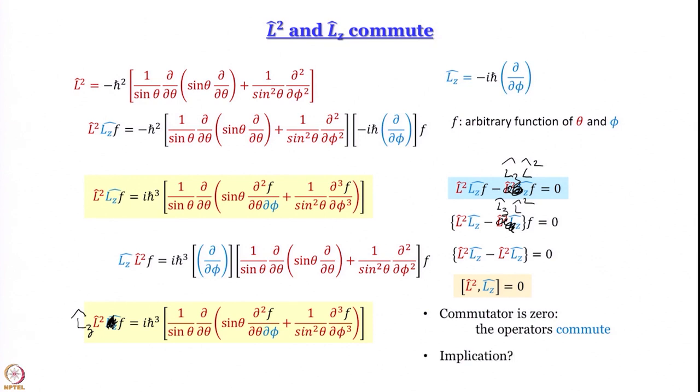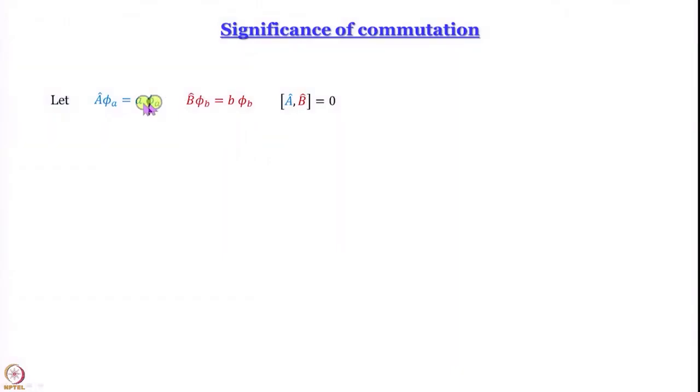The question logically arising from this discussion is: so what? The commutator is zero — how does that matter? To understand how it matters, we need to go back to the basics of quantum mechanics. Let us take a brief holiday from angular momentum and talk in terms of two general operators. Perhaps we should have done this at the beginning, but we wanted to get on with the show without too much nitty-gritty — so we will do it now that we need it. Let us say  is an operator, B̂ is an operator, and φ_a and φ_b are two functions, where φ_a is an eigenfunction of  with eigenvalue a, and A and B commute: [Â, B̂] = 0.